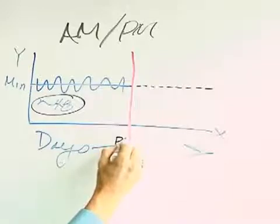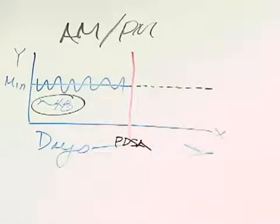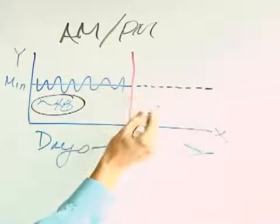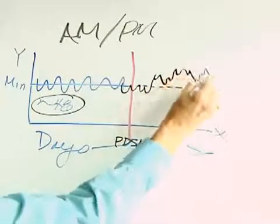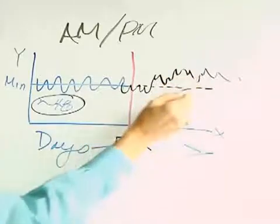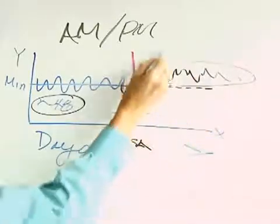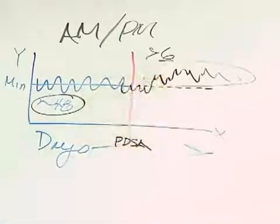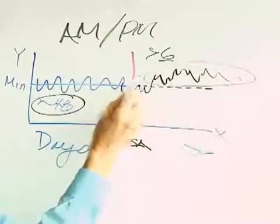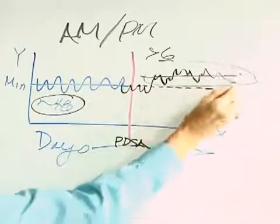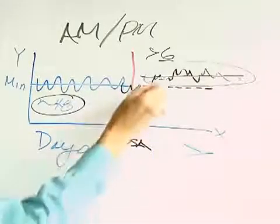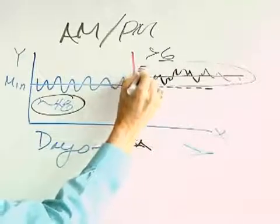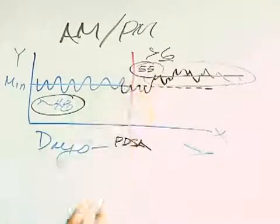So I've actually instituted a PDSA test right here. I thought this was a great idea. I plot the data. And what do I discover? That actually now I have a shift in my process because I had more than six data points above the median. And it was actually now taking me longer. And if I computed the average, the center line for this new commute time, it actually took me about 55 minutes on the average. It was a failed PDSA. So what do I do?